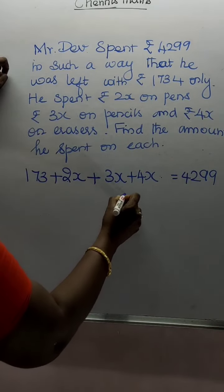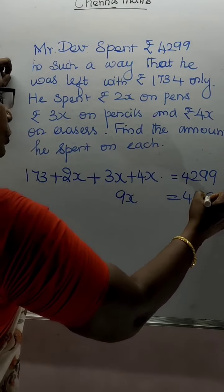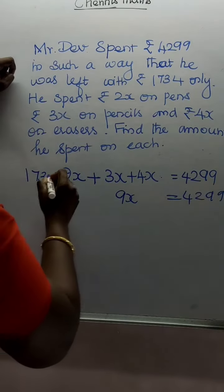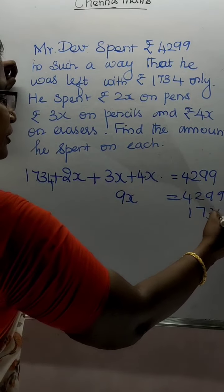Therefore, 9x is equal to 4,299 minus 1,734. Understood? 1,734.